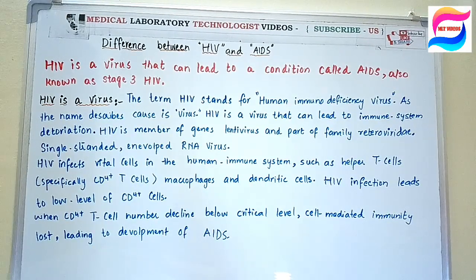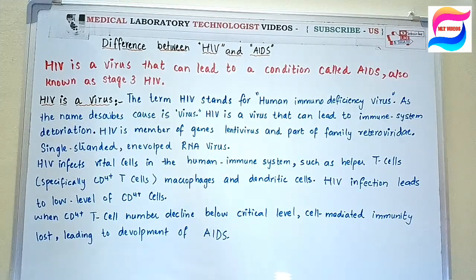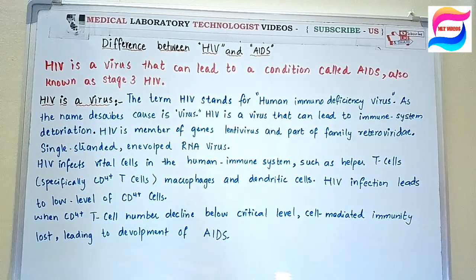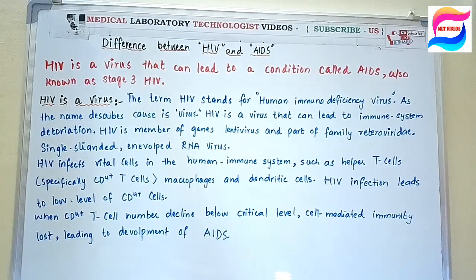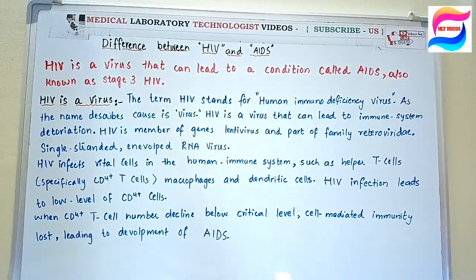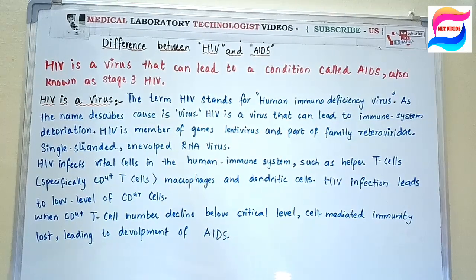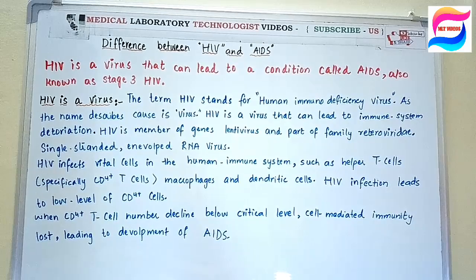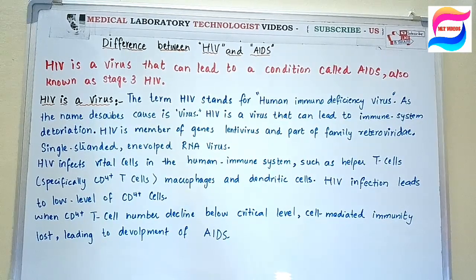It is not necessary that every HIV patient will develop the condition of AIDS. As science and medical treatments have progressed, if a patient is taking proper treatment they have good survival. Most of the time, HIV patients will not develop AIDS. But if a person does reach the condition of AIDS, it is certain that they have HIV. If a patient is taking proper treatment, there is a rare chance they will reach stage 3 HIV. So HIV is a virus, but AIDS is a condition — stage 3 HIV.